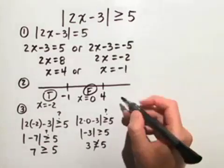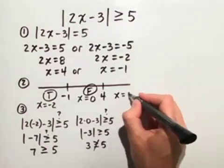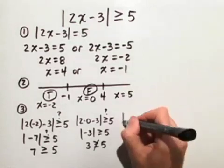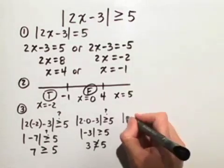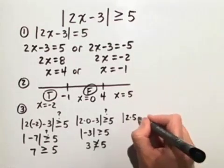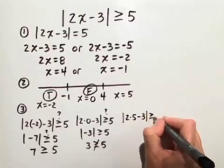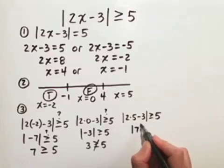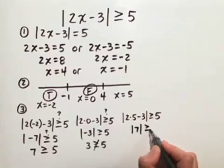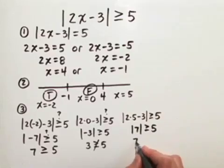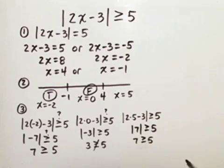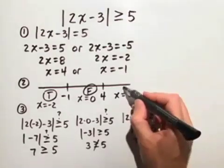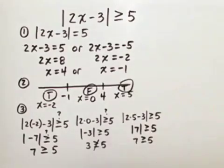Finally, we'll choose a value to the right of 4. Let's let x equal 5. The absolute value of 2 times 5 minus 3 is the absolute value of 7, which is greater than or equal to 5. That's true — so on the third interval, it provides a true statement.